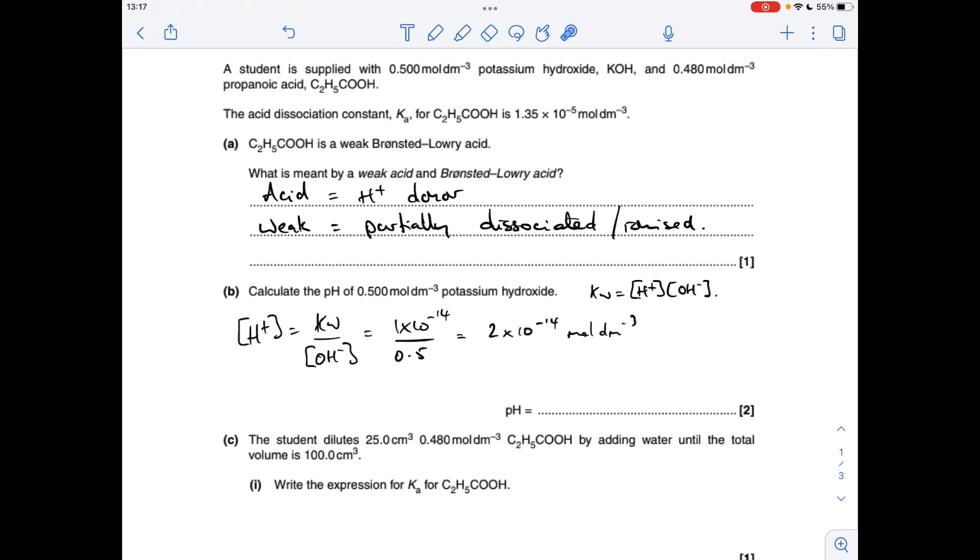When you rearrange the KW expression for H+ concentration, it becomes that. Putting the numbers in, get those. So the H+ concentration is going to be this number here. All we need to do now is minus log that to get the pH, and that comes out with 13.70.